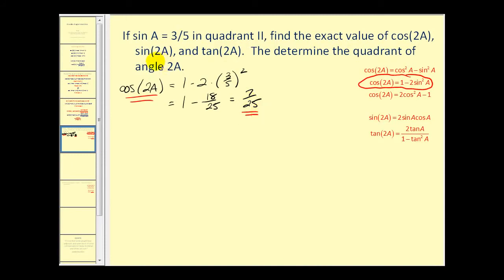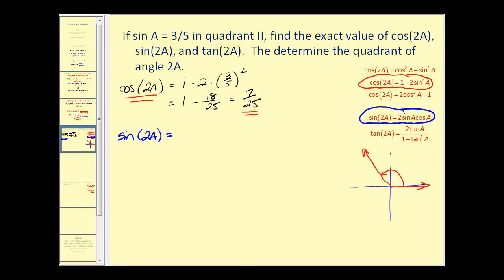Next, let's find sine of two A. There's only one identity for sine two A, and right away we can see we need to find cosine of angle A. With sine of three fifths in the second quadrant, we draw a reference triangle. This angle has a sine of three fifths — opposite over hypotenuse — so this is a 3-4-5 right triangle. Since we're in the second quadrant, we label the adjacent side negative four. So cosine A equals negative four fifths.